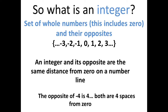An integer and its opposite are at the same distance from 0 on a number line. For example, the opposite of minus 4 is 4, and both are 4 spaces away from 0. Hopefully, it is clear to you.